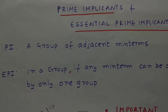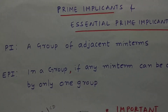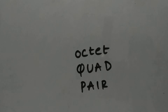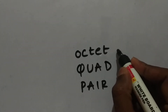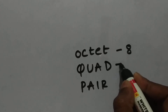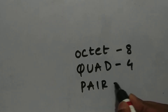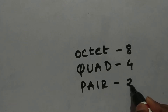So what is a prime implicant? A prime implicant is a group of adjacent min terms. So how is the grouping done in K-map? Grouping is done in three ways in K-map: an octate where we group eight min terms, a quad where we group four min terms, and a pair where we group two min terms.